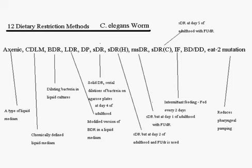DP and SDR stand for solid dietary restriction — serial dilutions of bacteria on agarose plates after the fourth day of adulthood. SDRH is SDR but starting at the second day of adulthood, and along with it, FUDR is used.